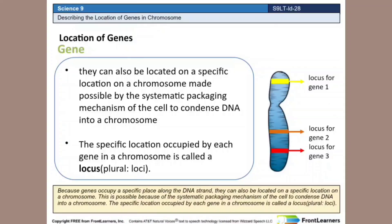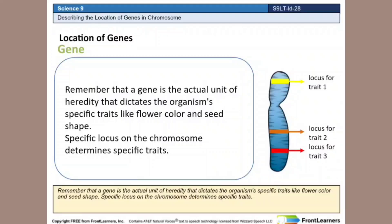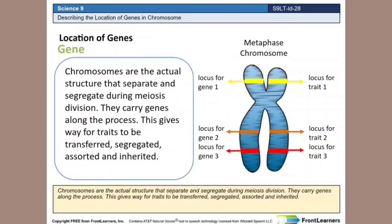The specific location occupied by each gene in a chromosome is called the locus, plural loci. Remember that a gene is the actual unit of heredity that dictates the organism's specific traits like flower color and seed shape. A specific locus on the chromosome determines specific traits. Chromosomes are the actual structures that separate and segregate during meiosis. They carry genes along in the process.